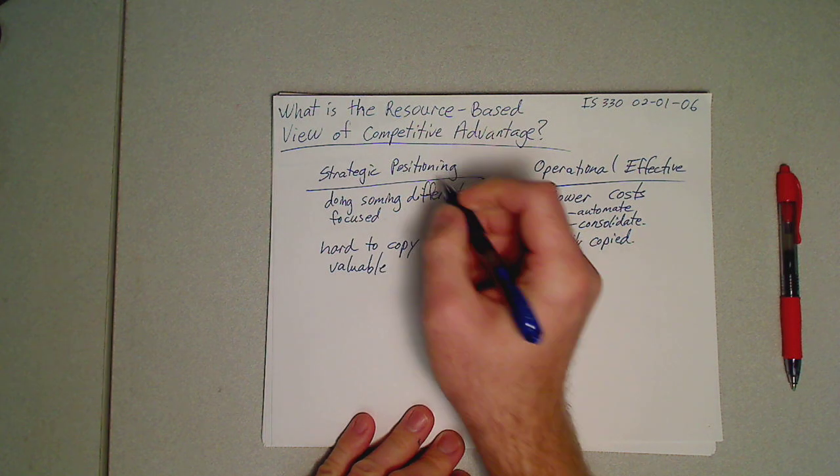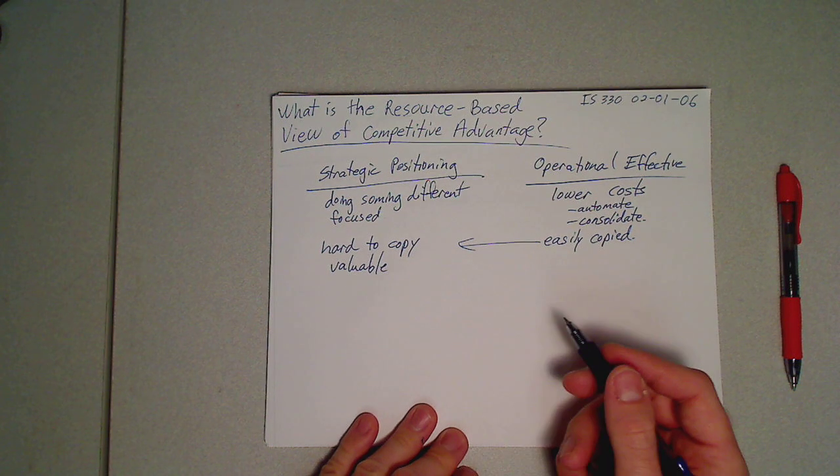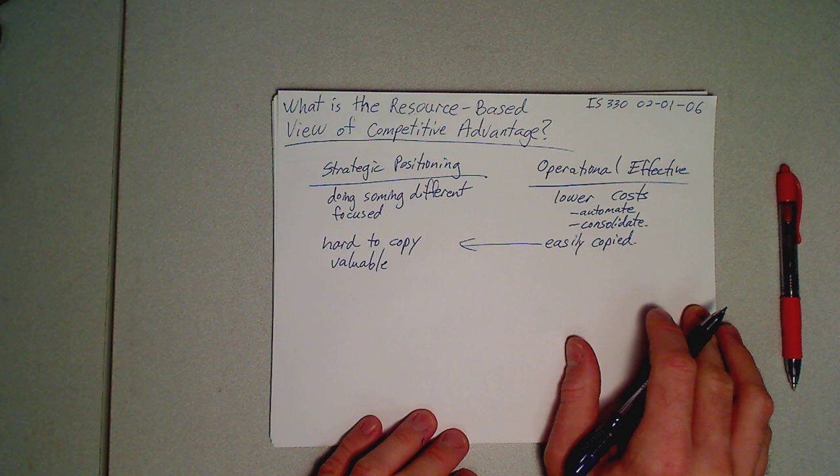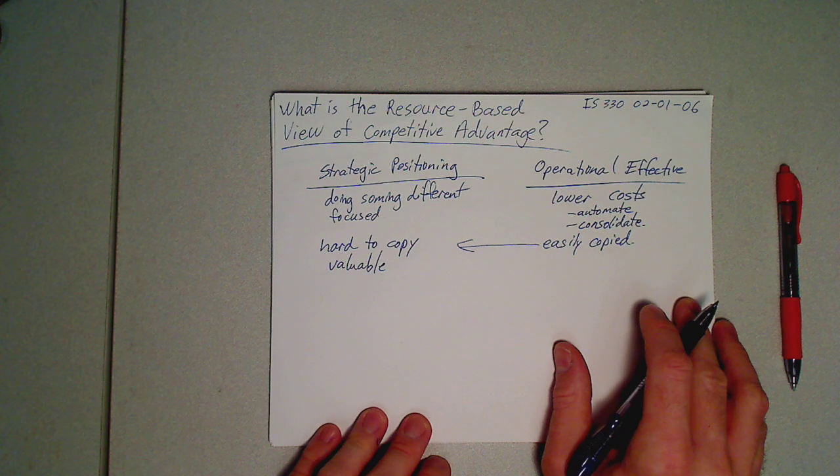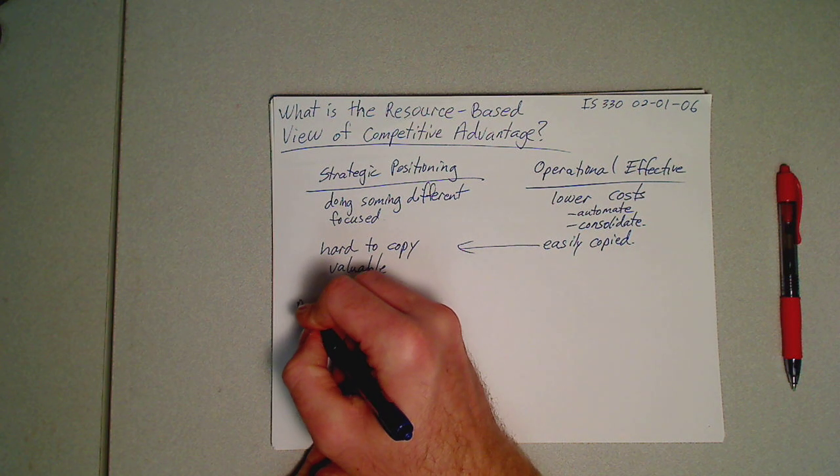So the resource-based view of competitive advantage suggests that firms have competitive assets or resources, and these resources